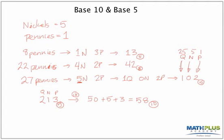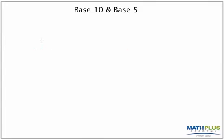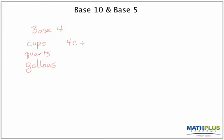Another example of where we could use a different base is base four. When would I ever use base four? Think about cups, quarts, and gallons. Four cups is equal to a quart, and four quarts is equal to a gallon. So I could think about making a number system where any time I get four cups I turn them into a quart, and any time I get four quarts I turn them into a gallon.